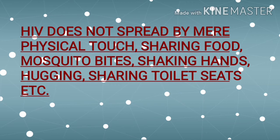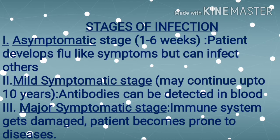Various stages of HIV infection include: the asymptomatic stage, which persists for the first two to six weeks of infection — the patient develops flu-like symptoms but can infect others. The mild symptomatic stage may continue up to 10 years; at this stage, antibodies can be detected in the blood.